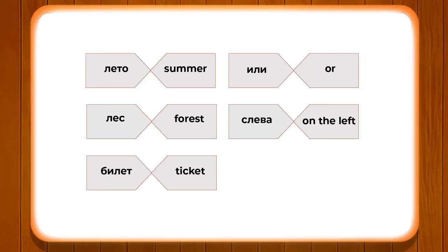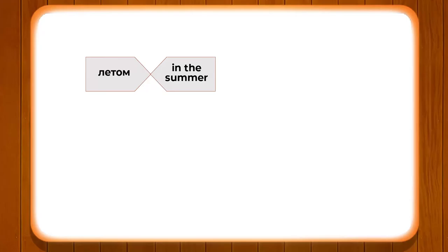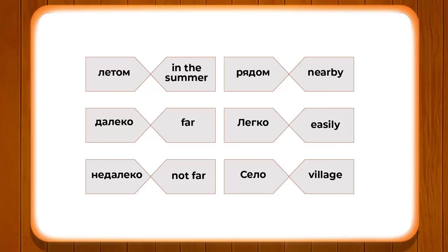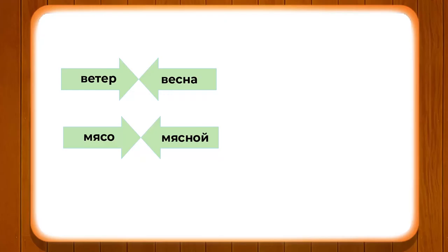Let's learn the meaning of these words. LES means forest, BILET means ticket, ILI means or, SLEVA means on the left. In the previous module we had SPRAVA meaning on the right — so you are also learning about directions. SAMOLYOT means aircraft, LETOM means in the summer, DALEKO means far, NEDALEKO means not far, RYADOM means nearby, LEGKO means easy, and SELO means village. For village we also use the word DEREVNYA.